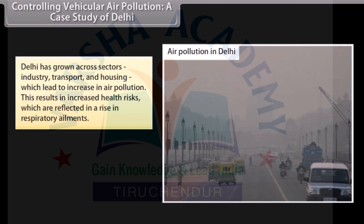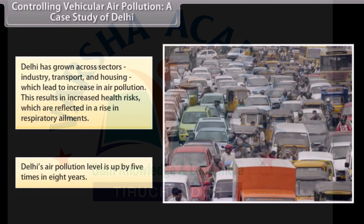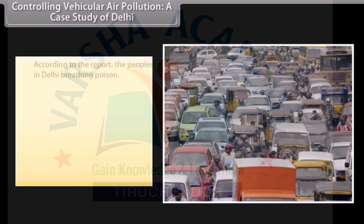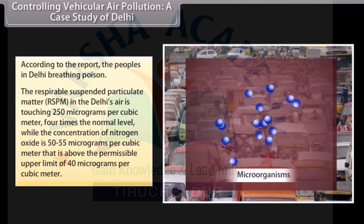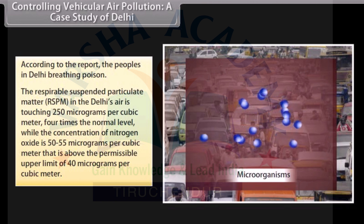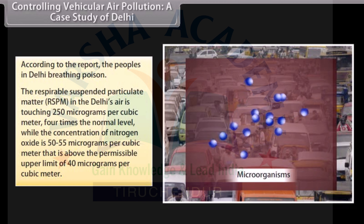Delhi has grown across sectors — industry, transport and housing — which has led to an increase in air pollution. This results in increased health risks reflected in a rise in respiratory ailments. Delhi's air pollution level is up by 5 times in 8 years. According to the report, people in Delhi are breathing poison. The respirable suspended particulate matter (RSPM) in Delhi's air is touching 250 micrograms per cubic meter, 4 times the normal level, while the concentration of nitrogen oxide is 50 to 55 micrograms per cubic meter, above the permissible upper limit of 40 micrograms per cubic meter.